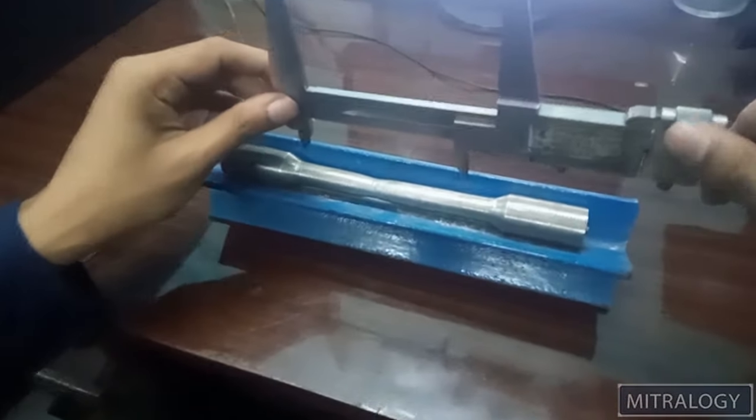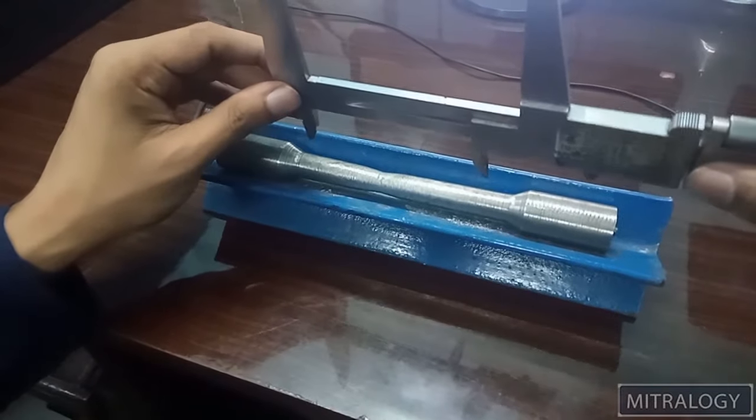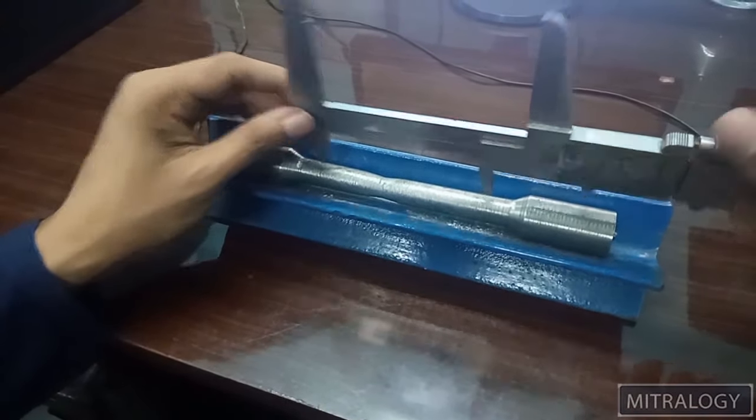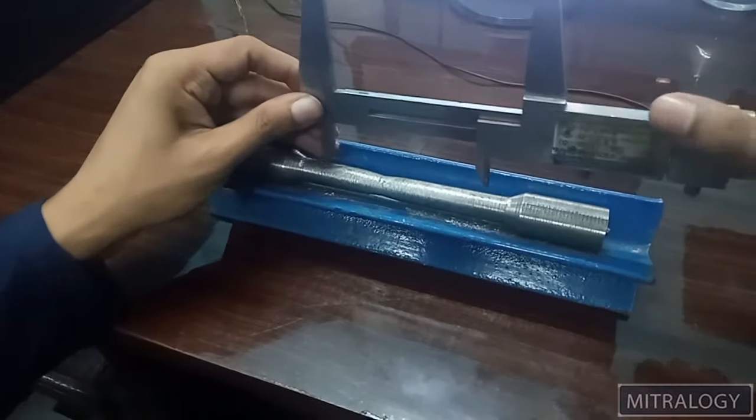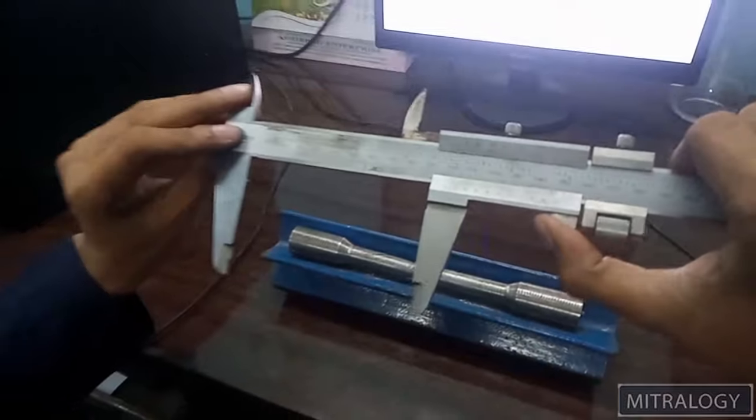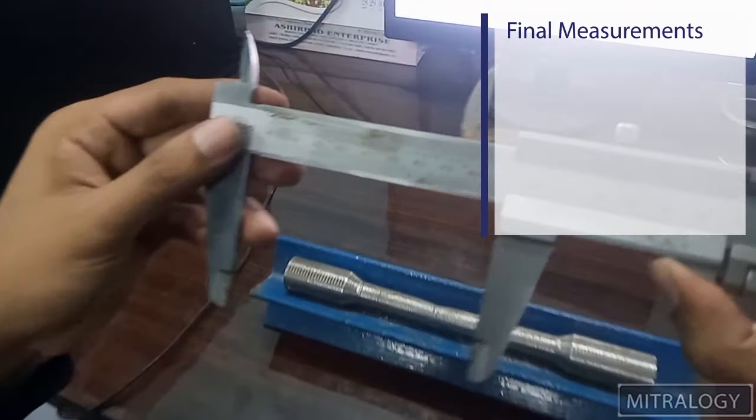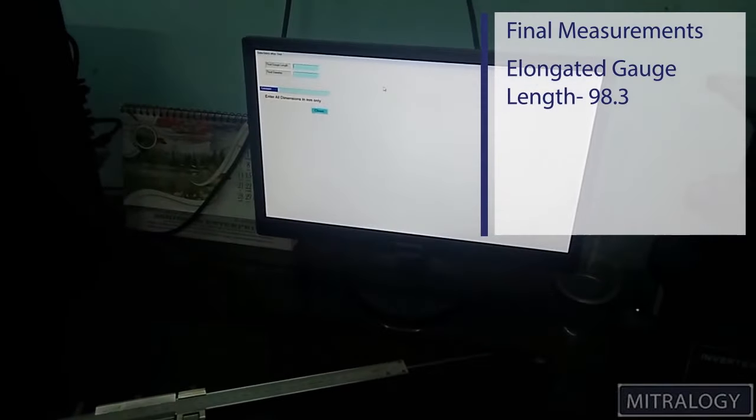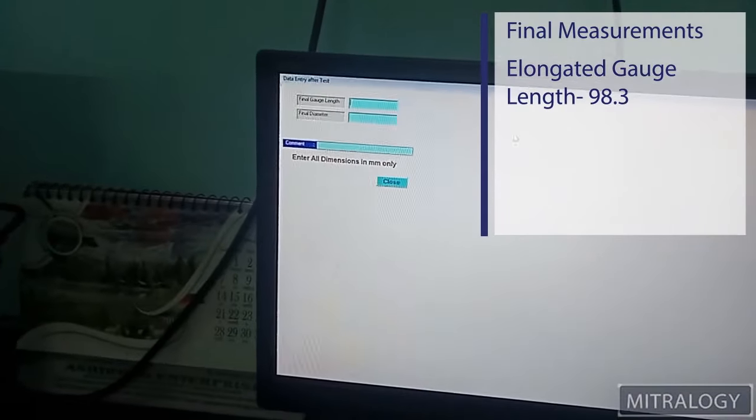We marked the gauge length before starting the test at 80. So this is now 98.3. So I am keeping it at 98.3.